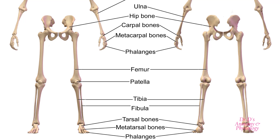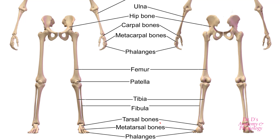The lower limb also includes the ankle bones or tarsal bones, the bones that form the arches of the foot or metatarsal bones, and the bones that form the digits — the toes — the phalanges.